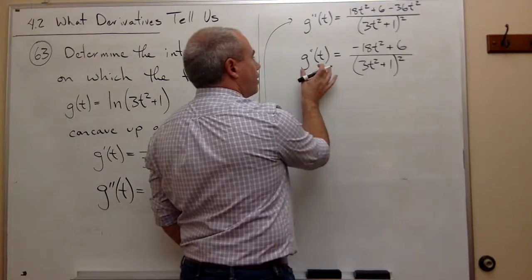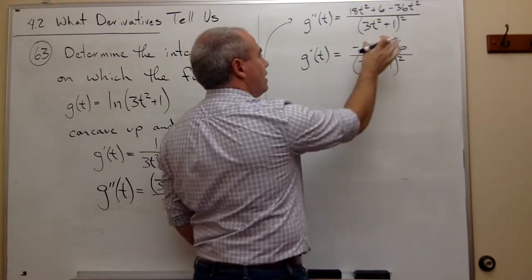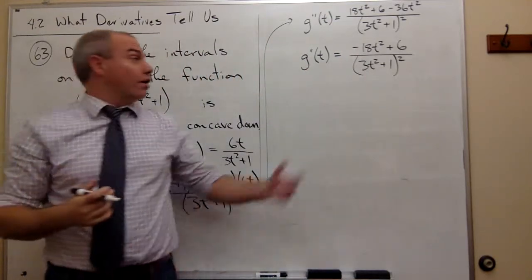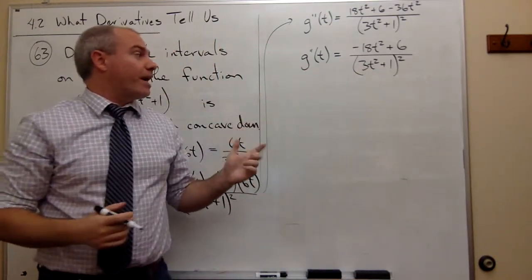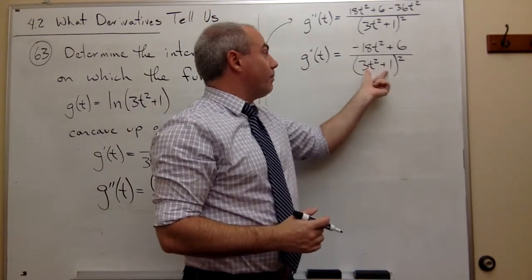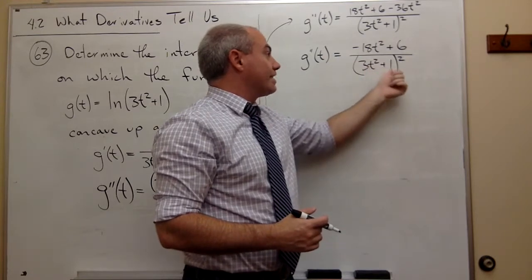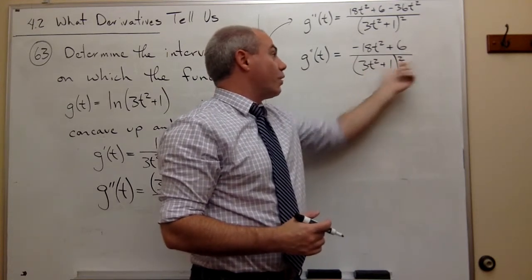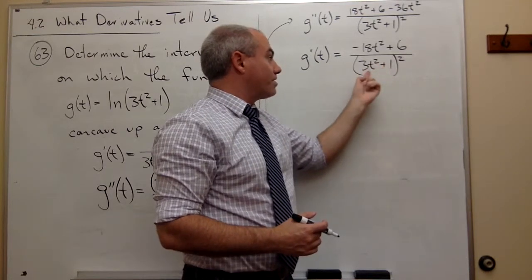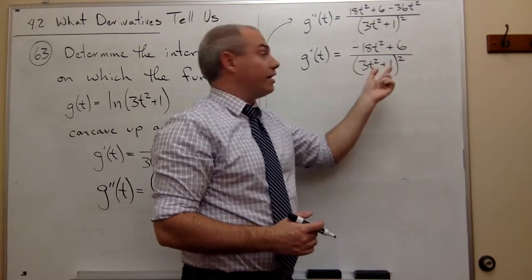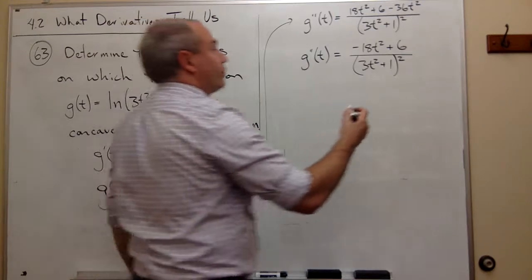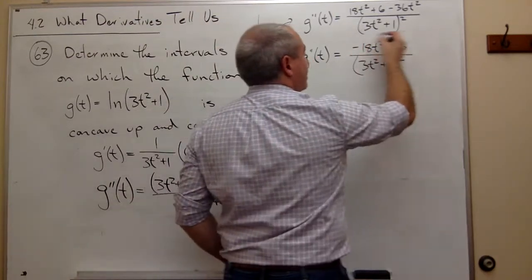What I need is, I want to know where is the second derivative equal to 0, in other words, where is the top equal to 0, or where is the bottom equal to 0. And right off the bat, I can see this bottom, that's not 0, right? Because the bottom cannot be 0, it's always going to be positive. Not only is it squared, but this thing is a positive number plus a positive number, that's never 0. This could be 0, but plus 1, it's not. So all I have to really deal with, then, is where is the top 0?